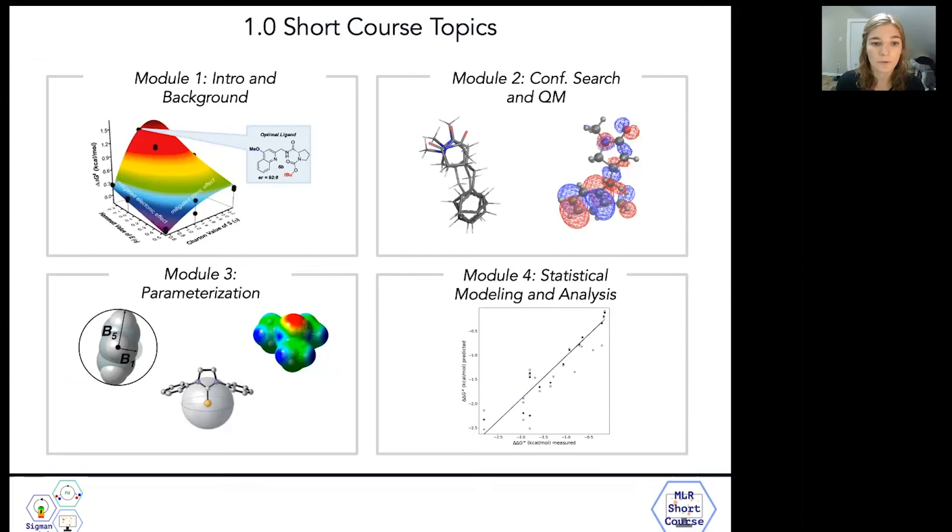And finally, in module four, Jake Worth is going to take over to describe the statistical methods we use to construct linear regression models that correlate observables, like selectivity or reaction rate, to computed molecular descriptors. This discussion will also address how to assess statistical models based on their performance and their ability to predict.